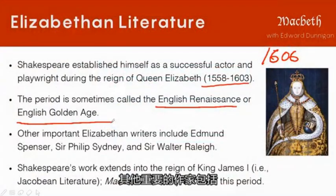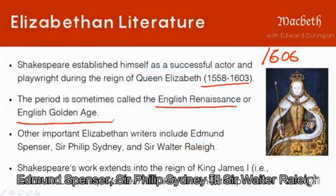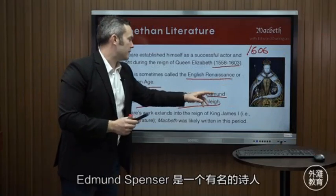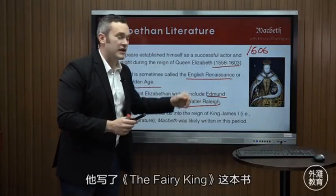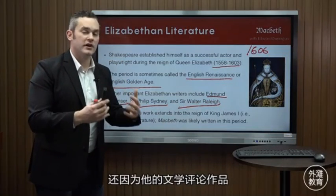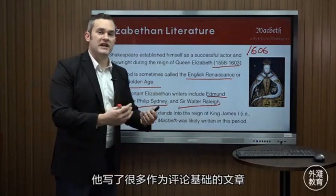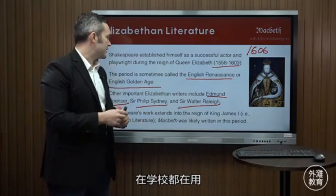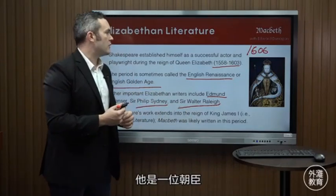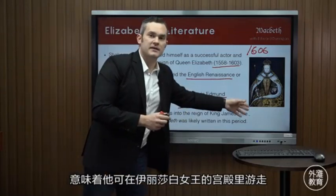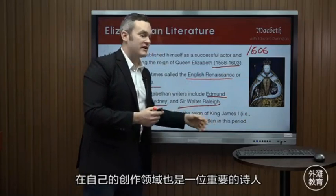Other important Elizabethan writers include Edmund Spenser, Philip Sidney, and Sir Walter Raleigh. Edmund Spenser was a popular poet who wrote The Faerie Queene. Philip Sidney is important not just for his poetry but for his critical work — he wrote some of the foundational documents that literary scholars use at English language universities today. Sir Walter Raleigh was a courtier who knew the nobility and was also an important poet in his own right.